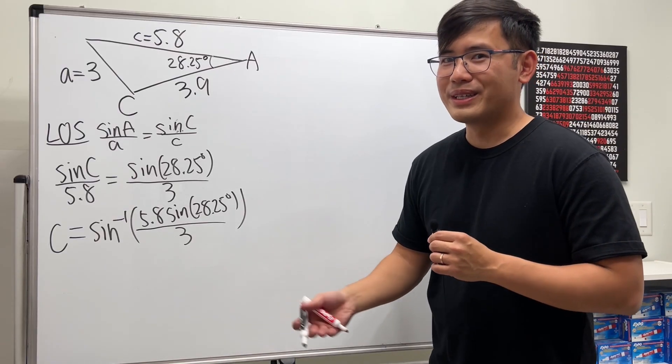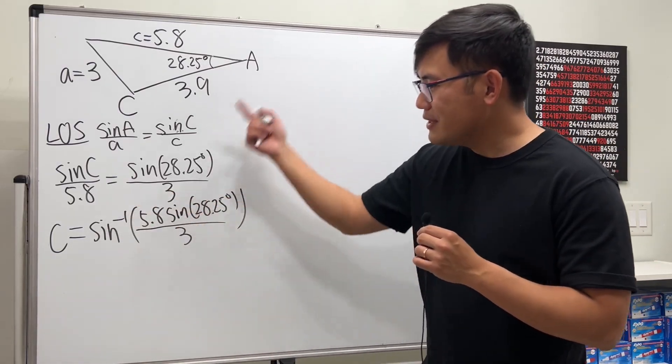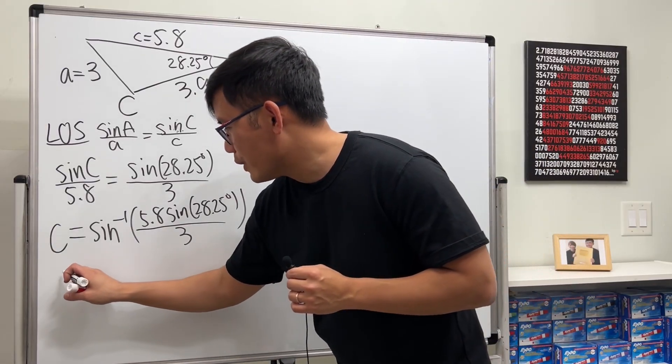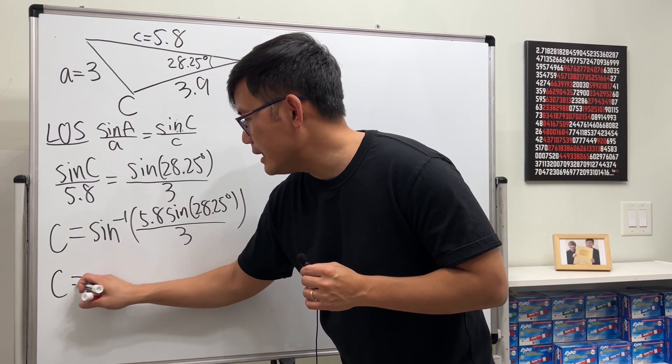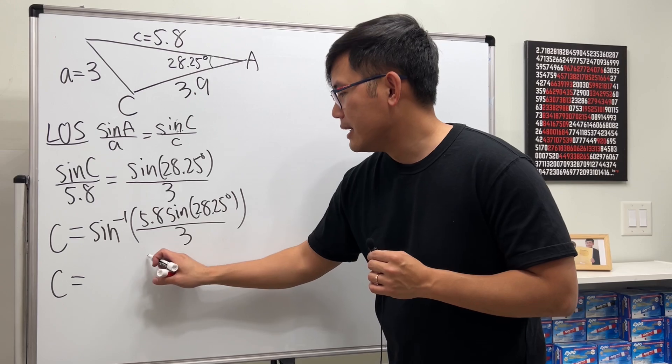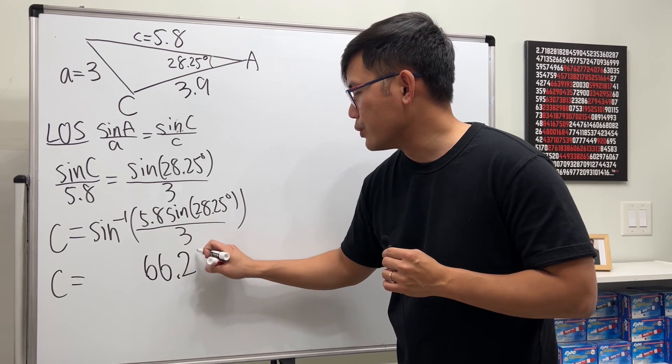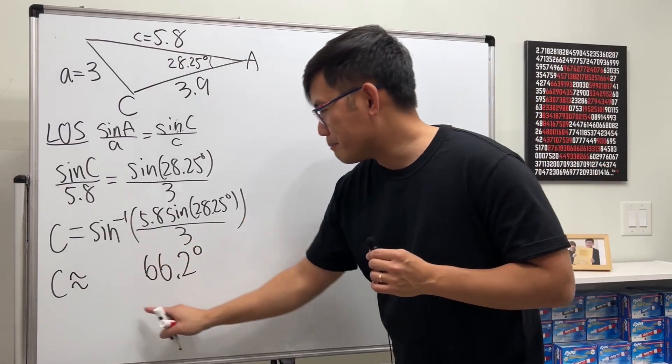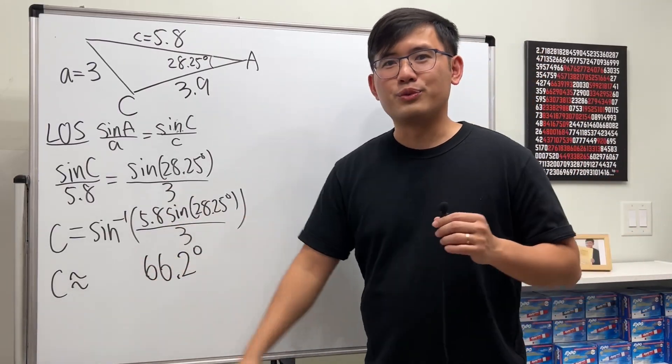And now this is the time that we can just use the calculator. Enter everything on the calculator and make sure your calculator is in the degree mode. We will get measure angle C being equal to, ready? 66.2 degrees. And I should say approximately equal to. All right. Done deal. Box the answer and get this question wrong.